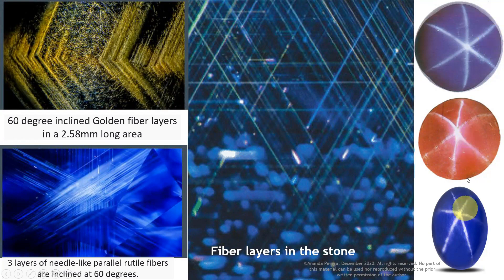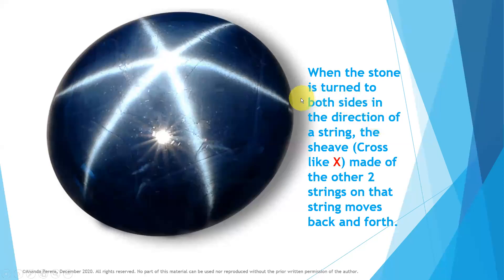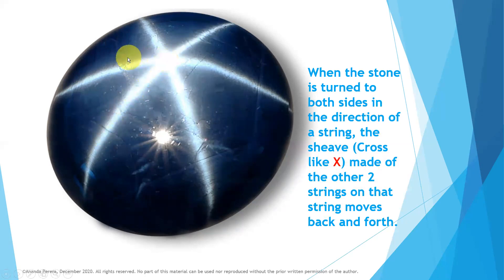The top side — it is a star ruby. These two are blue stars. This is called star ruby; this is not star blue, it is blue star. When the stone is turned to both sides, in the direction of a string, a cross like an X shape made of the other two strings on that string moves back and forth. This cross is moving this side and the other side. Both moving angles must be the same — then it is a good quality stone.